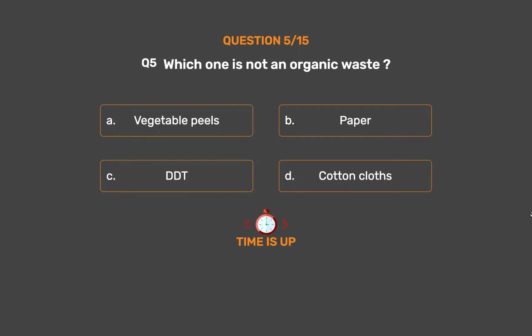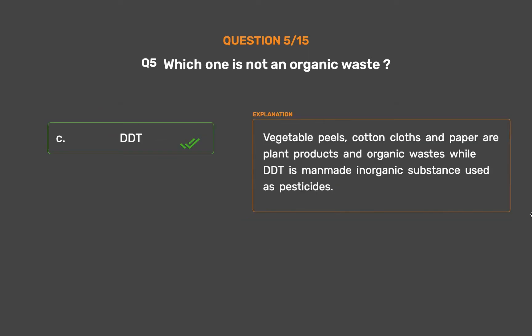The correct answer is Option C: DDT. Vegetable peels, cotton cloths and paper are plant products and organic wastes, while DDT is a man-made inorganic substance used as a pesticide.